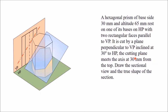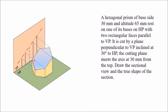This plane meets the axis at 30 mm from the top — that means from the top of this axis, this distance is 30 mm. This plane is meeting at 30 mm from the top of this axis. After cutting this section, you have to draw the top view and front view of the remaining portion of the solid.